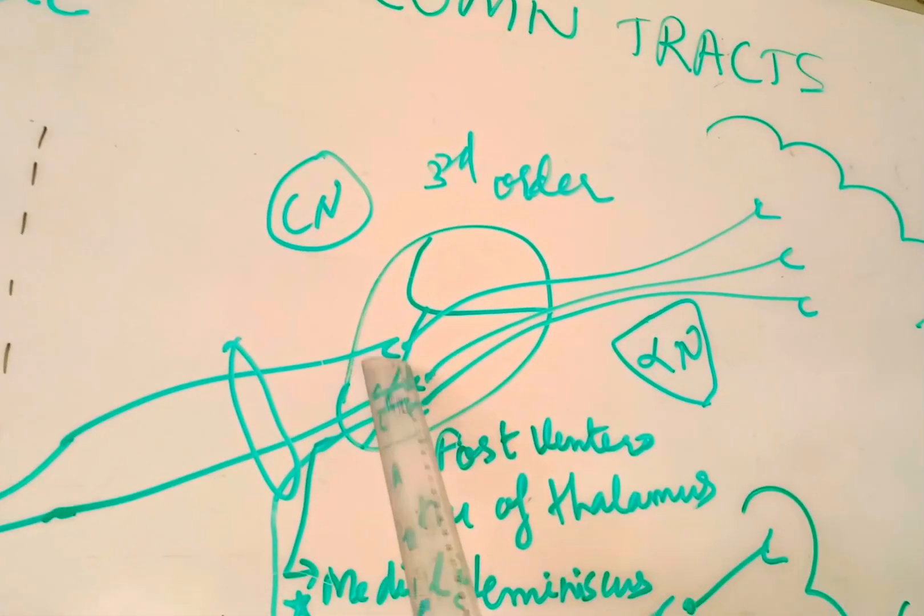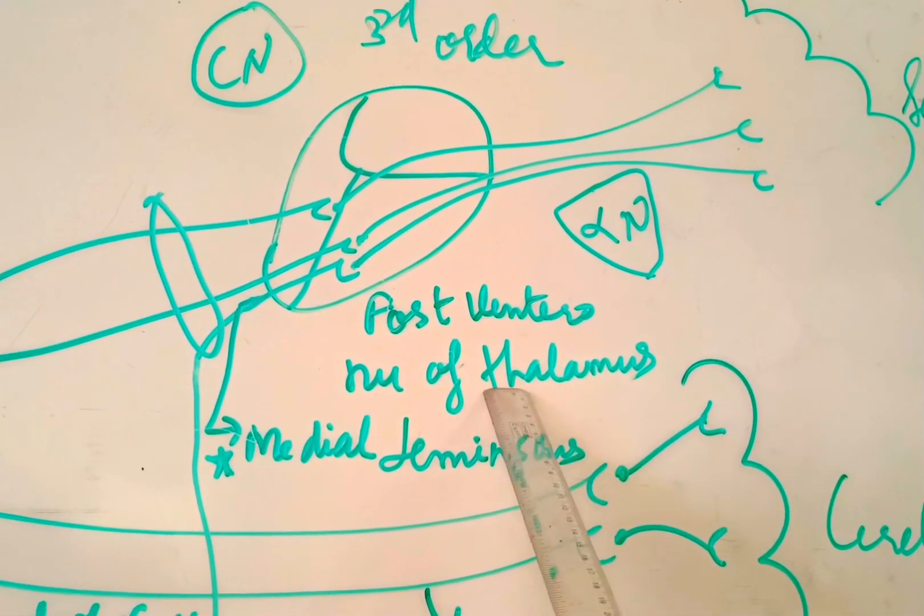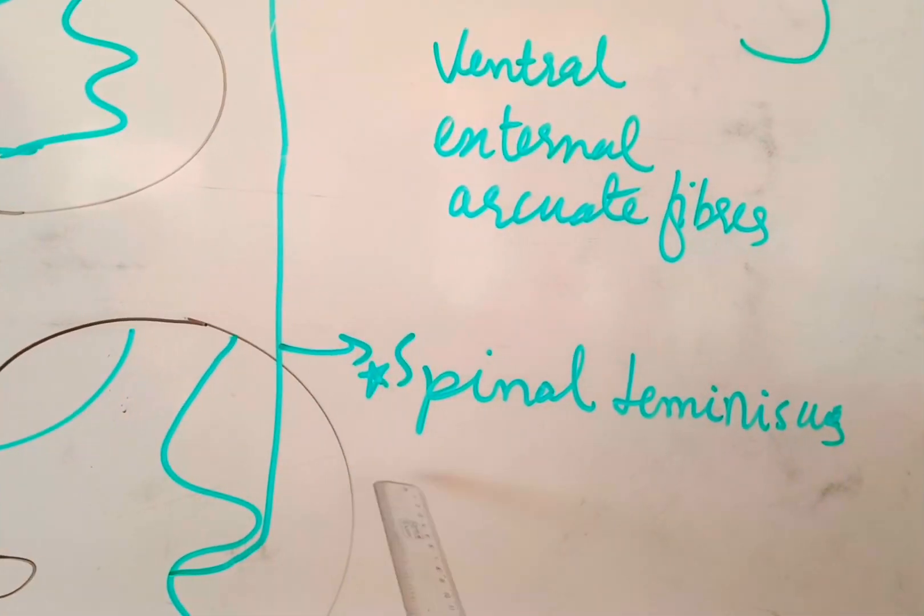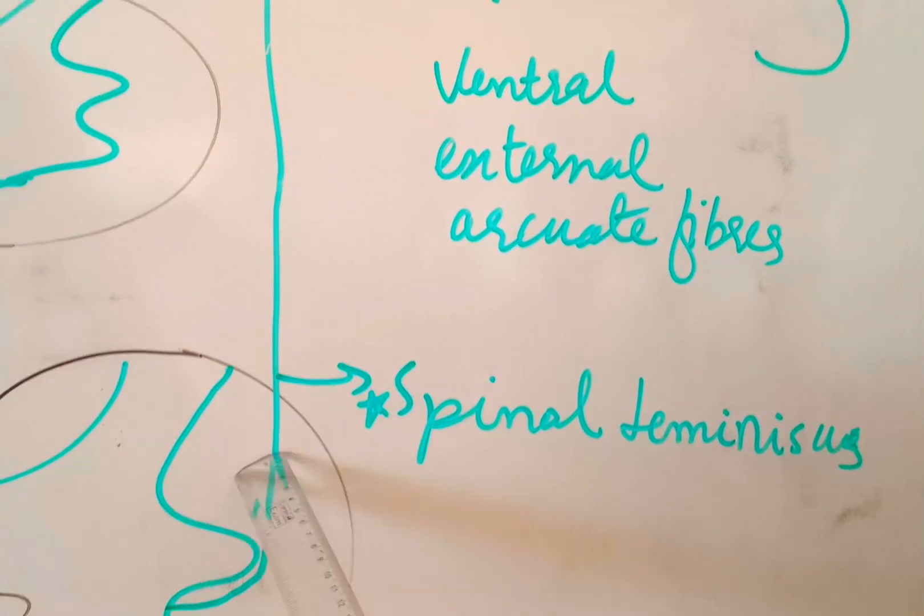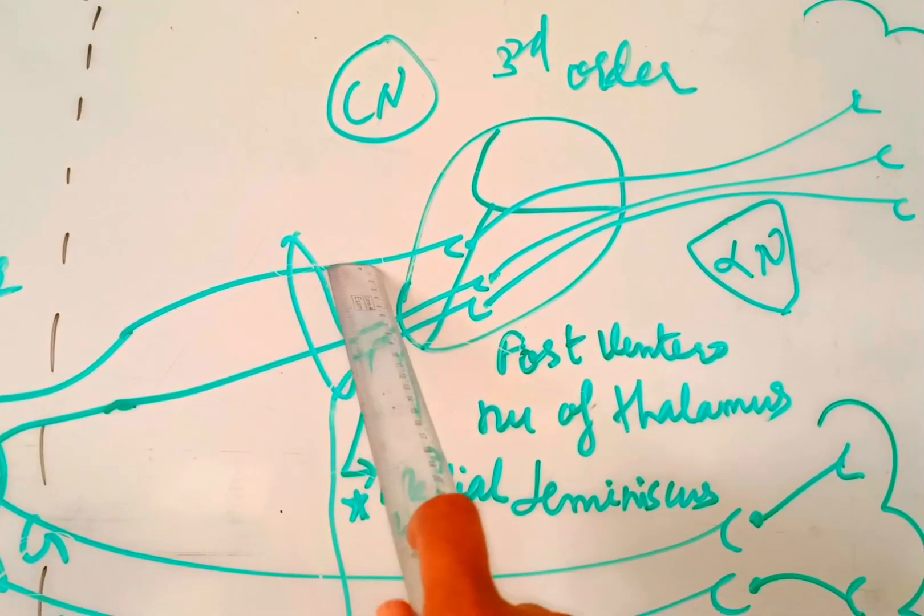Now these fibers meet the spinothalamic tract fiber, that is the spinal lemniscus, and form the medial lemniscus. So this is the diagram showing the spinal lemniscus forming the medial lemniscus.